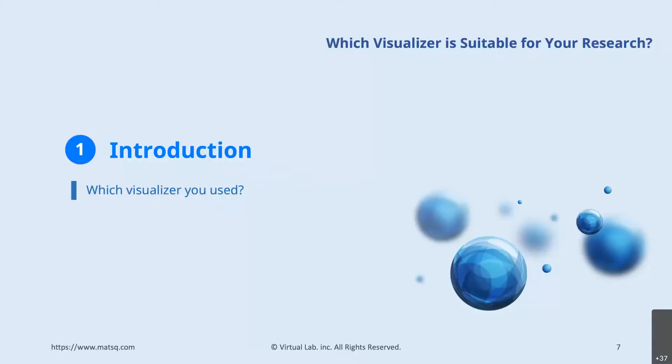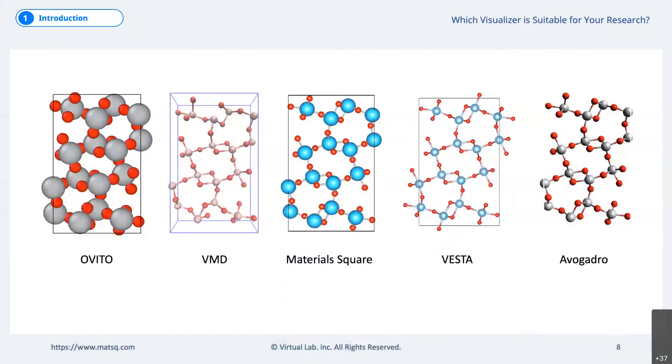Introduction. Of course, there are other visualizers. But today, I want to look at the five free visualizers that are widely used in the material field. OVITO is a visualizer developed by OVITO GmbH in Germany that allows you to use basic functions for free. Of course, if you use OVITO Pro, a paid visualizer, you can use more features. But the free version also offers a great variety of good features.